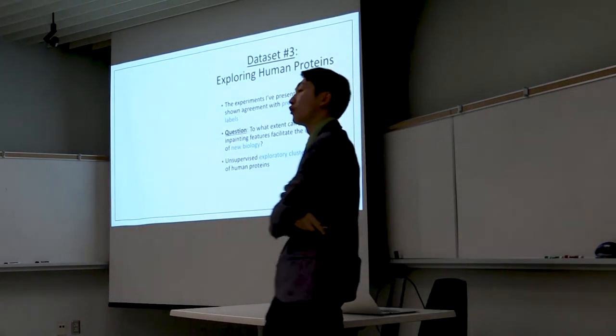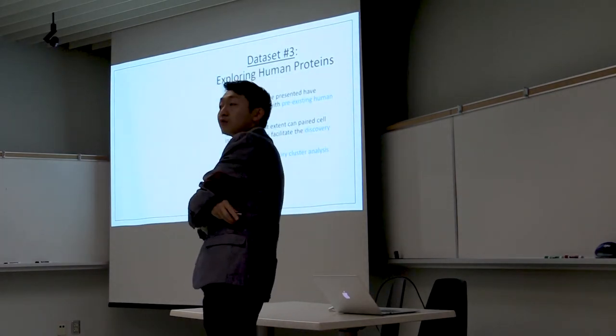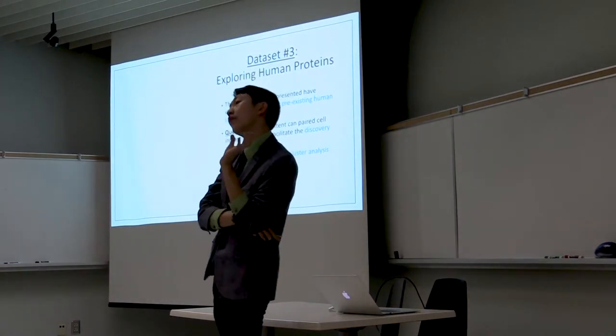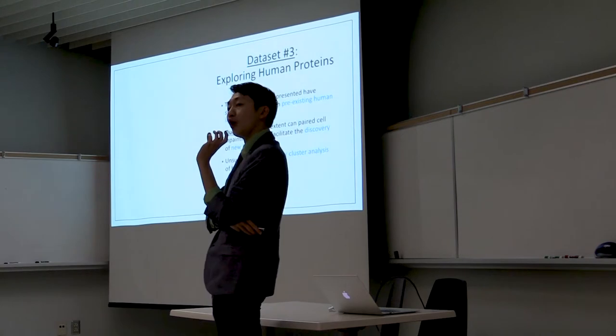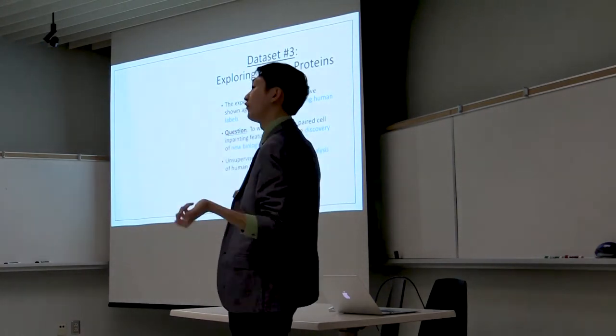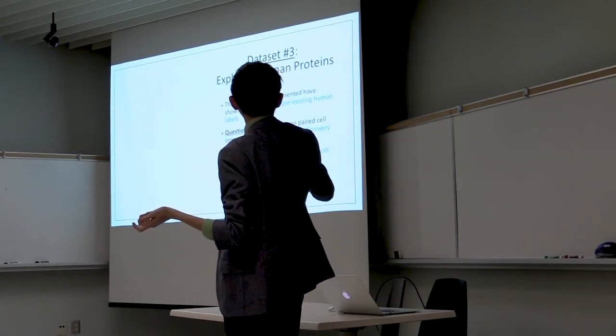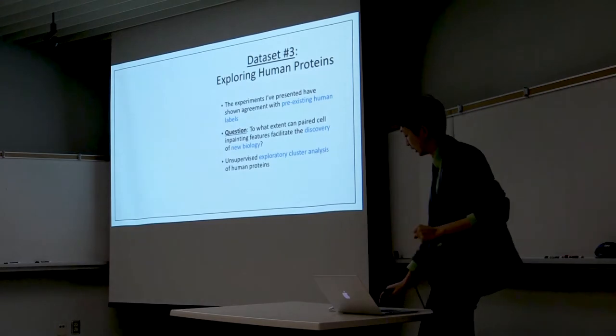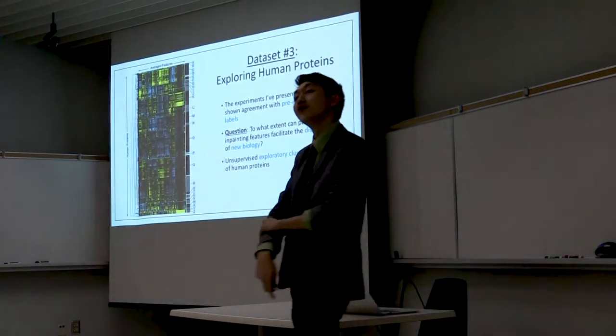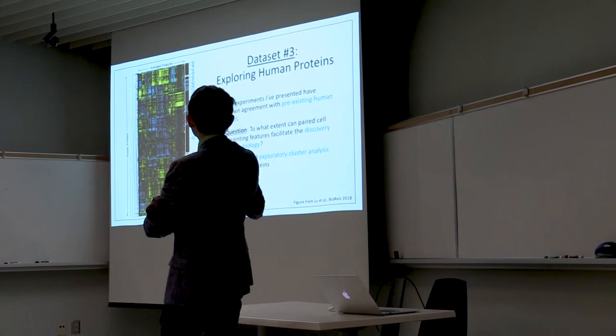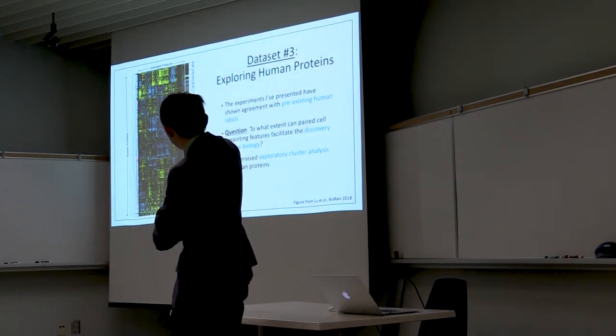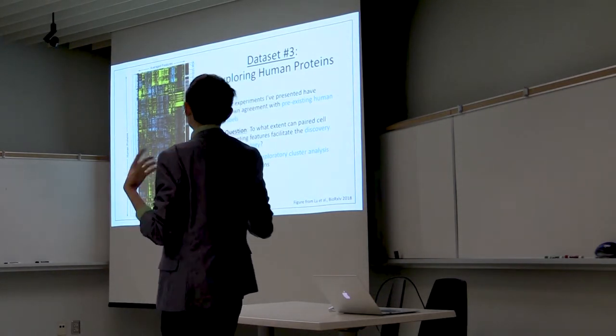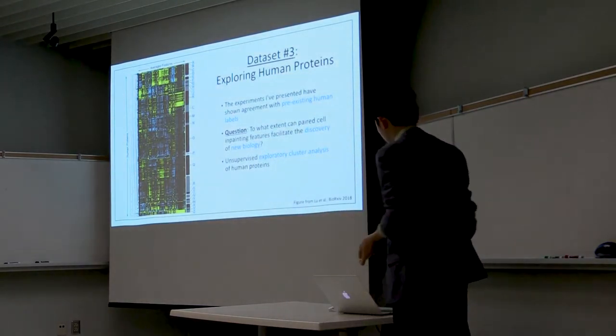Okay, so the last analysis I'm going to show you is the human dataset. The experiments on the two yeast datasets have shown agreement with pre-existing human labels. Now I want to emphasize that's not the only thing we can do with these features. So we asked a different question here. To what extent can cell profiling be used to aid the discovery of new biology? And to answer this, we did an unsupervised exploratory cluster analysis of human proteins. So here are the results, and it's visualized as a heat map here. You can see every single row on this heat map is a different human protein, and you've got about 12,000 different human proteins here. You can see that the heat map forms distinct clusters, and we don't have time to go over all of these today.